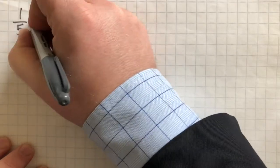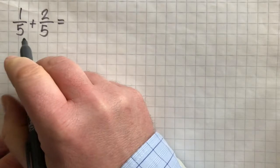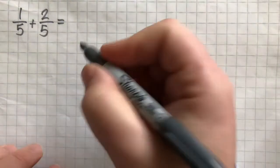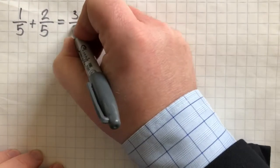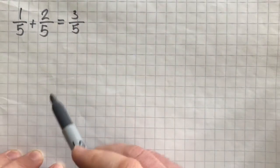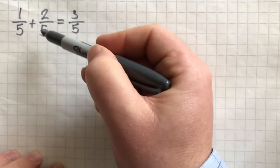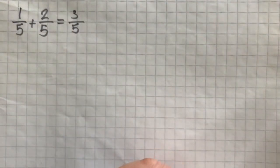So, in this example, we have 1 fifth plus 2 fifths. Because they are the same, 5's at the bottom, all we need to do is add the numerators together. It's a bit like if we had 1 apple plus 2 apples, the answer would be 3 apples. So, here we just have 1 fifth plus 2 fifths is 3 fifths.